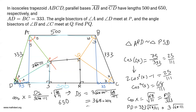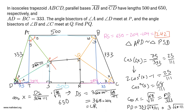By symmetry, CR is also 204. So DS and CR are both 204. Therefore RS equals CD minus DS minus CR equals 650 minus 204 minus 204, which equals 242. Since PQ equals RS, the final answer is PQ equals 242.